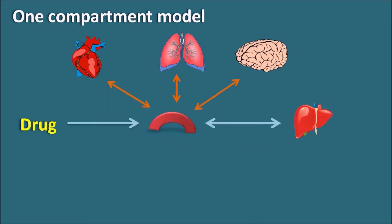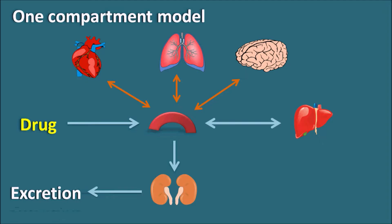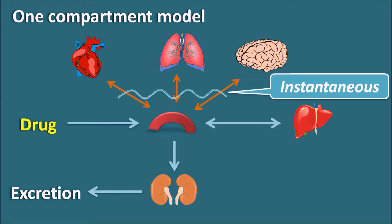After the first pass metabolism, the drug is going to be distributed based on its lipophilicity and volume of distribution. Finally, the drug can also be entering into the kidney where it is going to be excreted in the urine. This is the fate of the drug entering into the body. If the distribution of the drug into the various organs is instantaneous, then we can consider the kinetics of the drug as one compartment model.